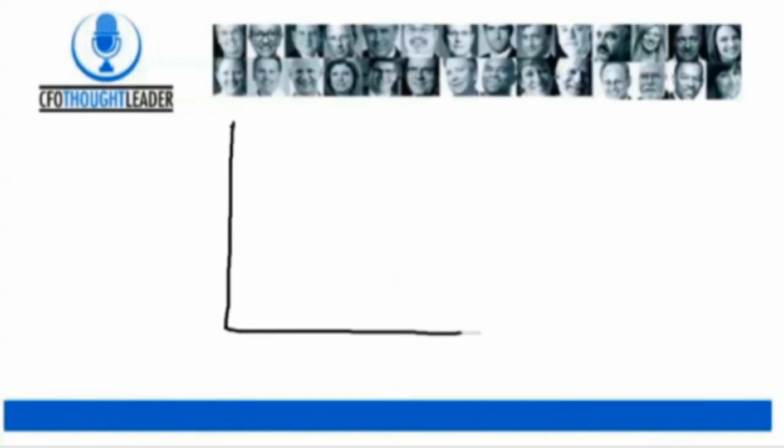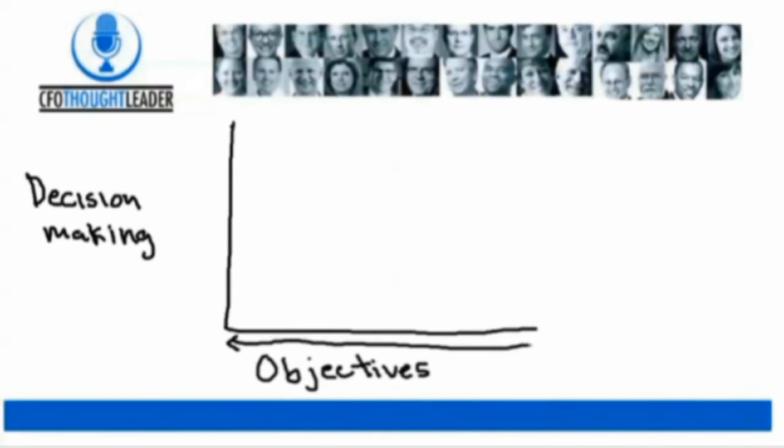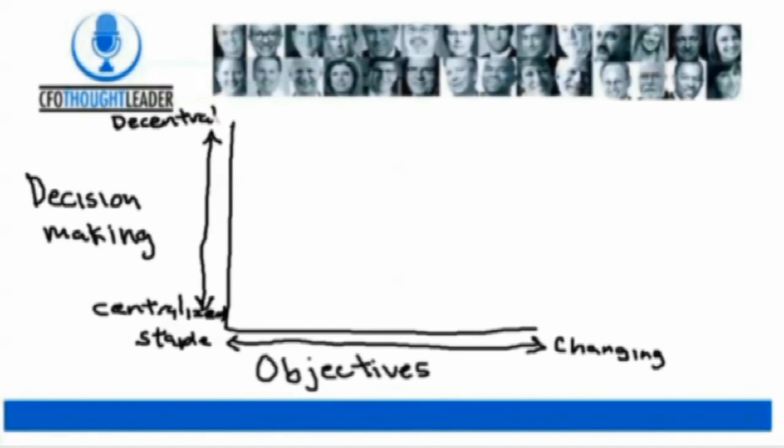So let me begin by putting objectives on the x-axis and decision-making on the y-axis. Objectives will span from stable to changing. Now as you know, there's been a lot written about innovative cultures and how they're organized to be responsive to change. We'll have decision-making span from centralized to decentralized.